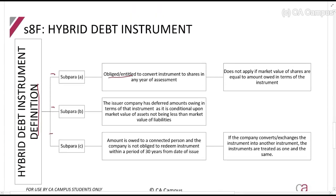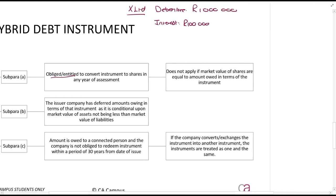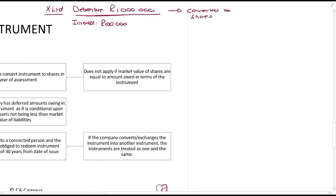The first category is if you are obliged or entitled to convert the instrument into shares in any year of assessment. For example, X Limited issues a debenture worth R1 million, with interest at 10% — so R100,000 for the year. If this debenture can be converted to shares, it is a hybrid instrument. It's not normal for debt instruments to convert into shares; it's basically shares in disguise — you first call it debt and later make it equity.